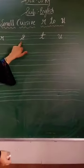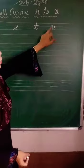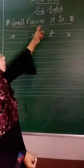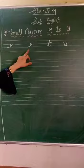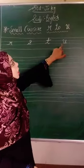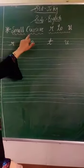R, S, T, U. These all are small cursive. R, S, T, U. These all are small cursive.